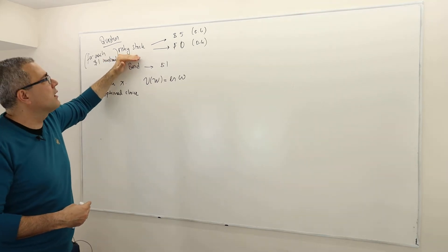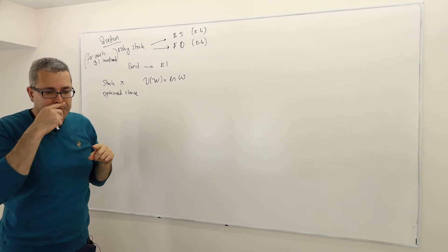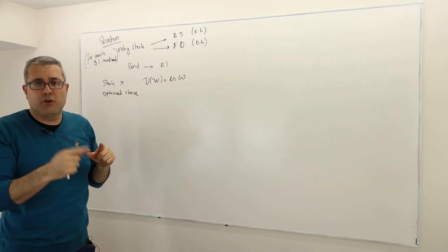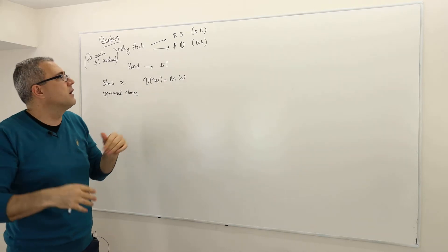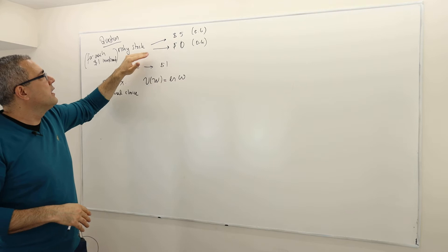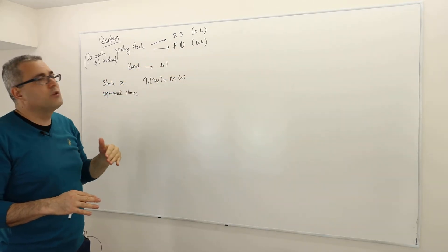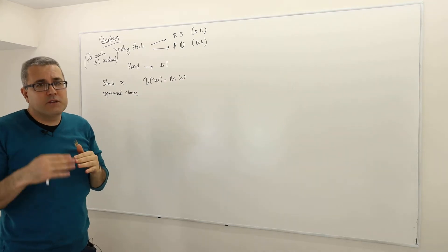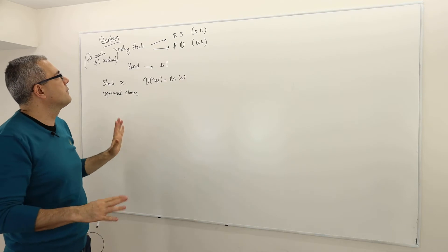If you invest in a risky stock with probability 0.6, you're going to win $4 for every dollar you invested, so your total becomes $5. However, with probability 0.4, you lose your dollar, and so your $1 investment becomes $0.